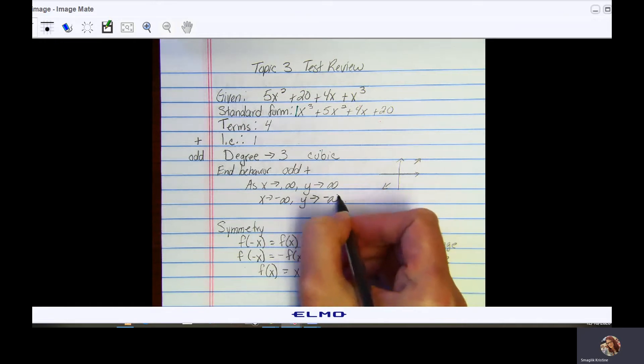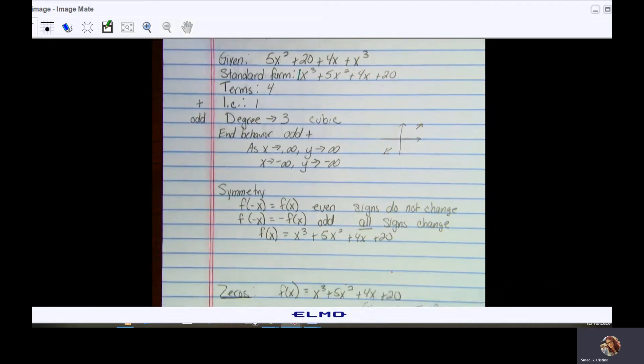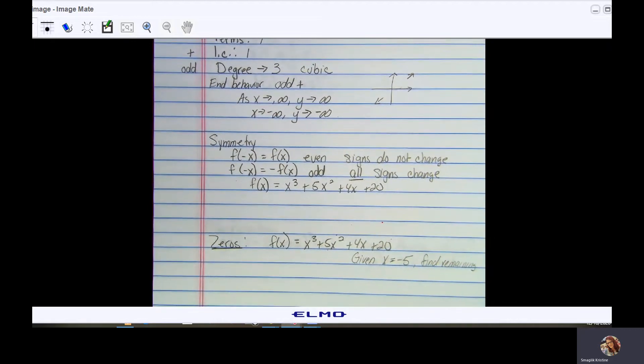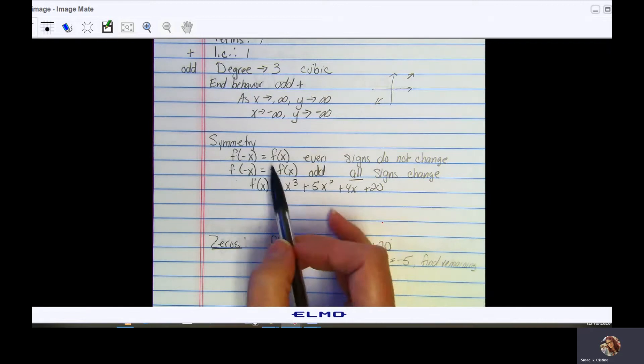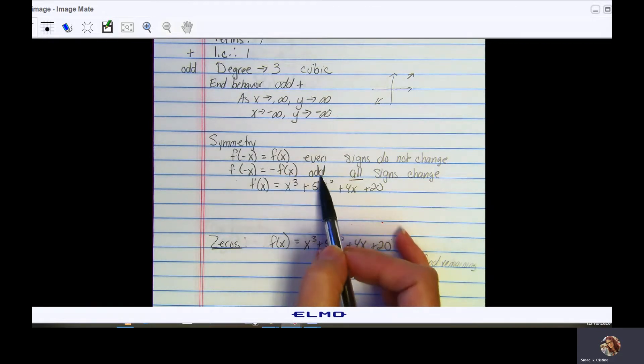Now let's talk symmetry. We have these algebraic rules that we can follow to determine if a function is considered even or odd. Don't confuse even and odd symmetry with even and odd end behavior - they are two different things. If a graph is even, if a function is even, that means it is symmetric about the y-axis. If a graph is odd or a function is odd, it is symmetric about the origin.